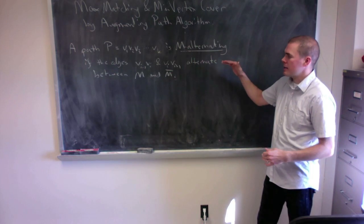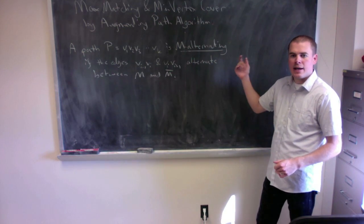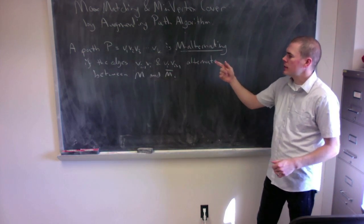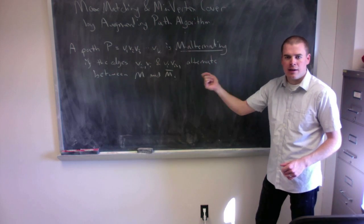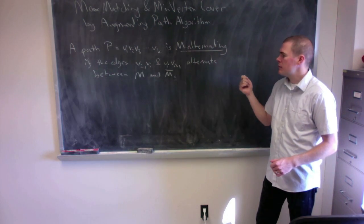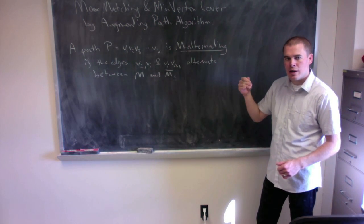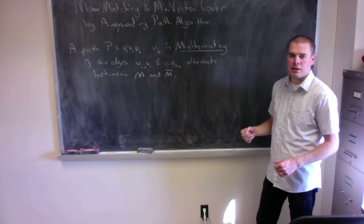We say that a path v1 through vk is M-alternating if the edges v(i-1),vi and vi,v(i+1) alternate between being in the matching M and not being in the matching.